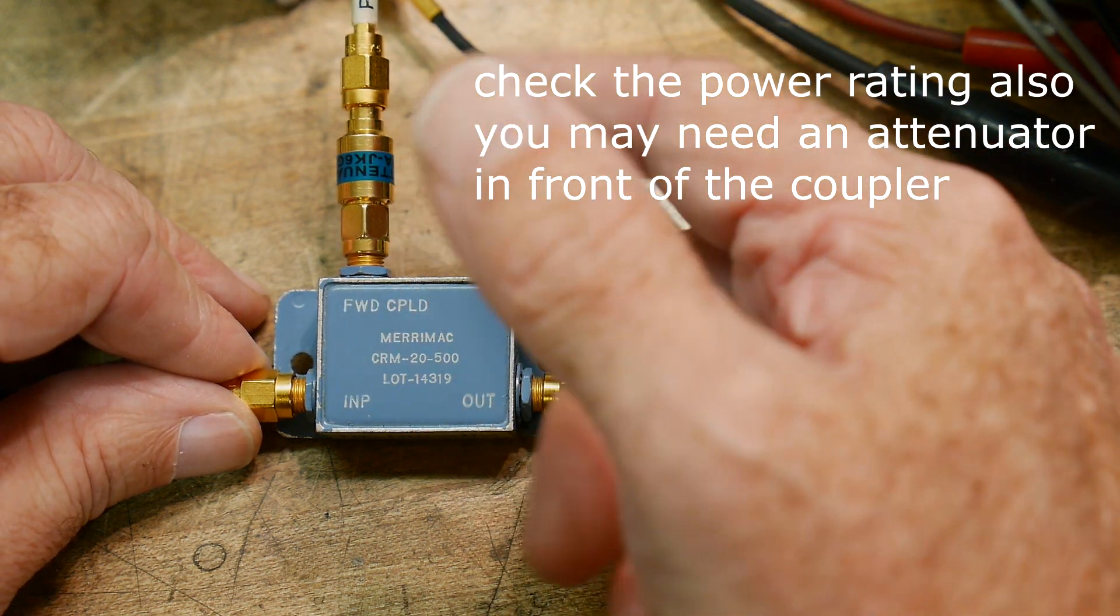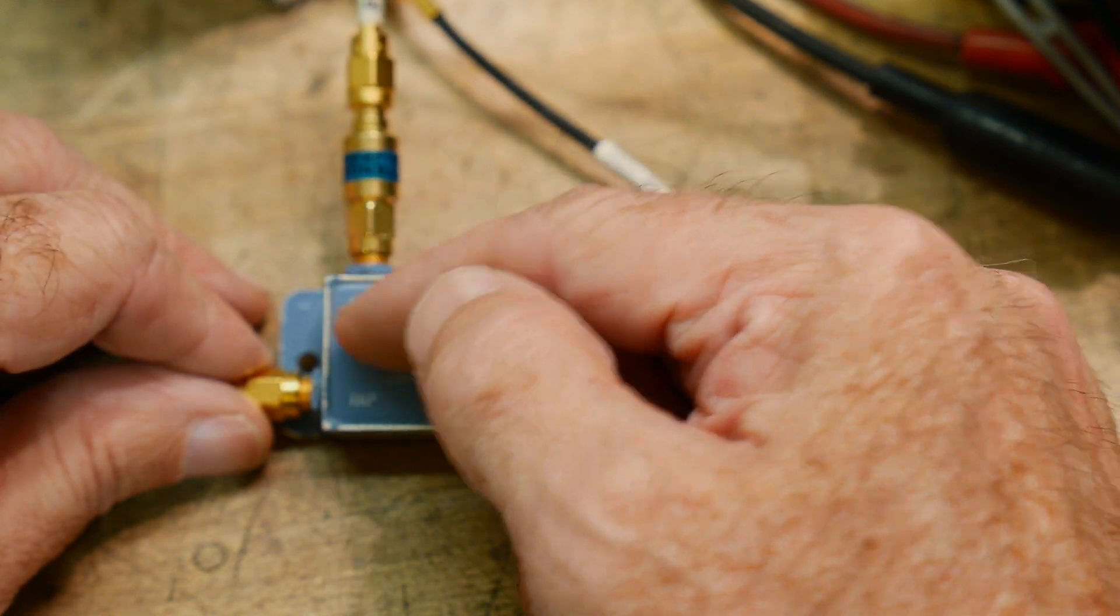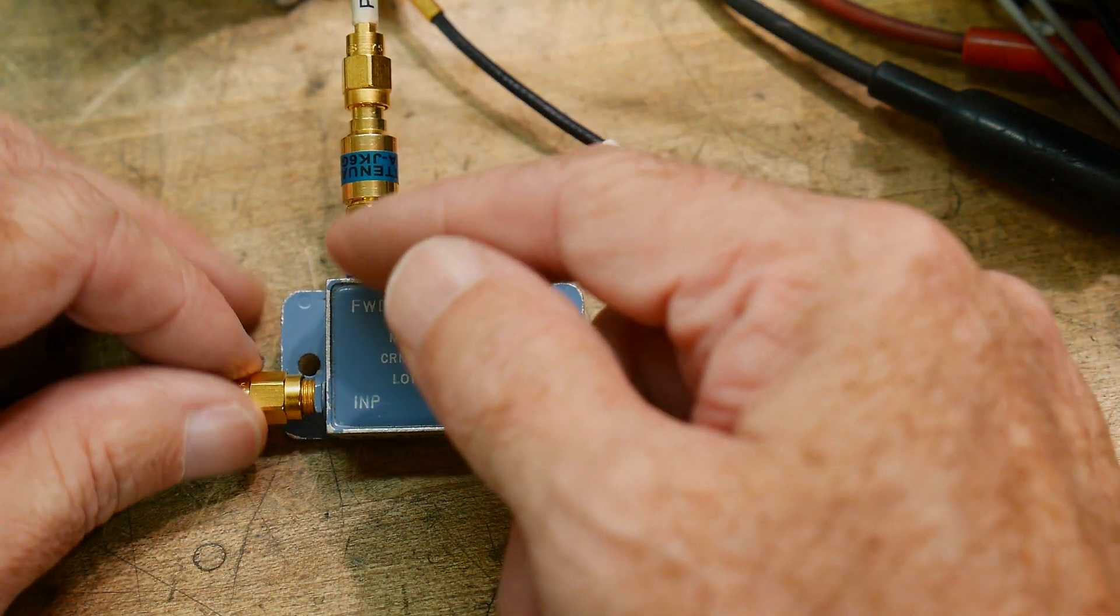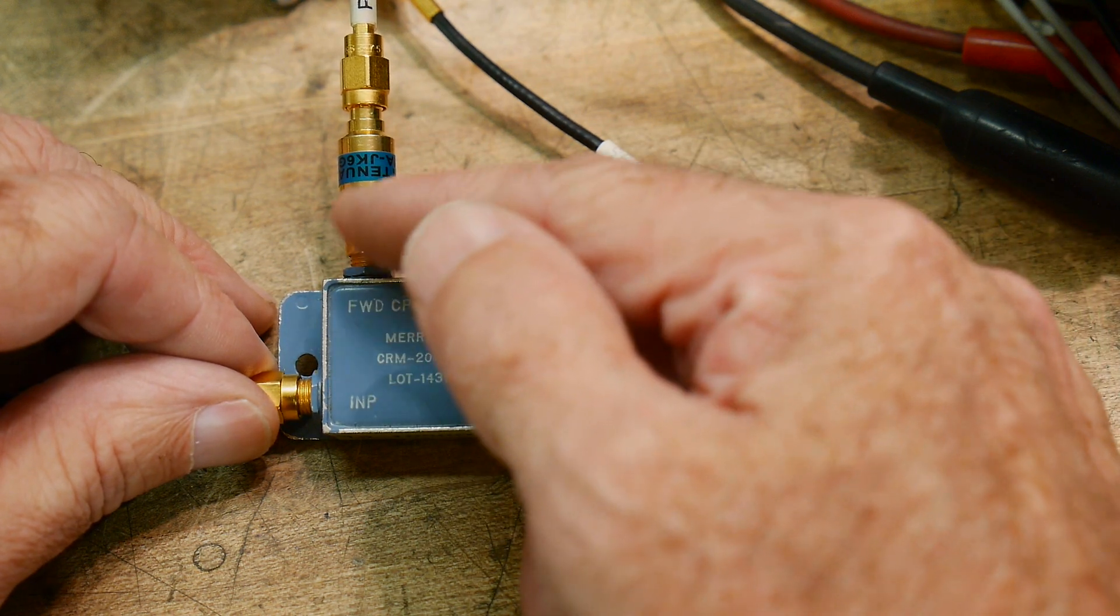Then know what the coupling output's going to be. Couplers are going to be somewhere around 10 to 30 dB of coupling. 10 to 20, I think, are pretty usual numbers, either 10 dB or 20 dB. This one happens to be minus 13.